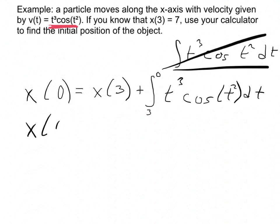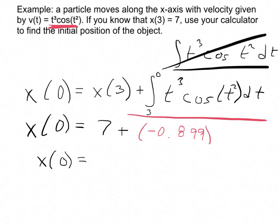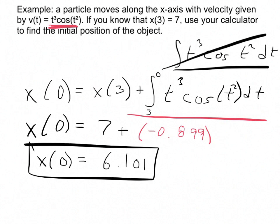And so now what I'm doing is I'm literally just using my calculator. I'm just saying, okay, x of 3 was 7 plus this integral done on the calculator is negative 0.899. And so that means my position at time 0 is 7 plus that, which is 6.101. And that is the initial position of the object.